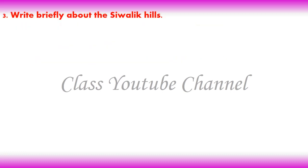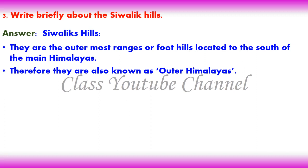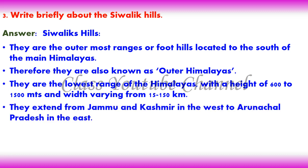3. Write briefly about the Sivalik Hills. Answer: Sivalik Hills are the outermost ranges or foothills located to the south of the main Himalayas. They are the lowest range of the Himalayas, with a height of 600 to 1500 metres and width varying from 15 to 150 km. They extend from Jammu and Kashmir in the west to Arunachal Pradesh in the east.